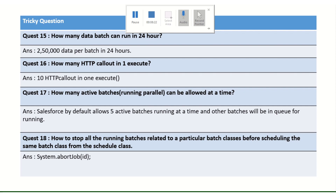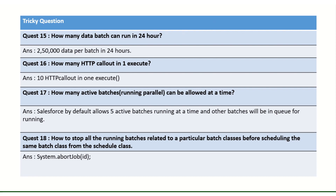How can we stop a batch that is currently running? Go to the Monitor Jobs section to get the ID of the running batch, then call System.abortJob with that batch ID. This will immediately terminate the job.